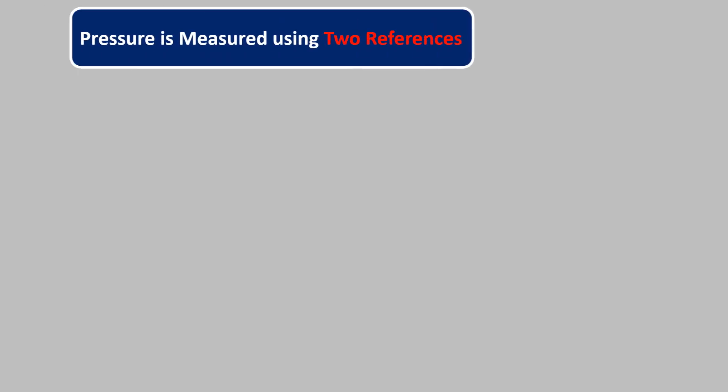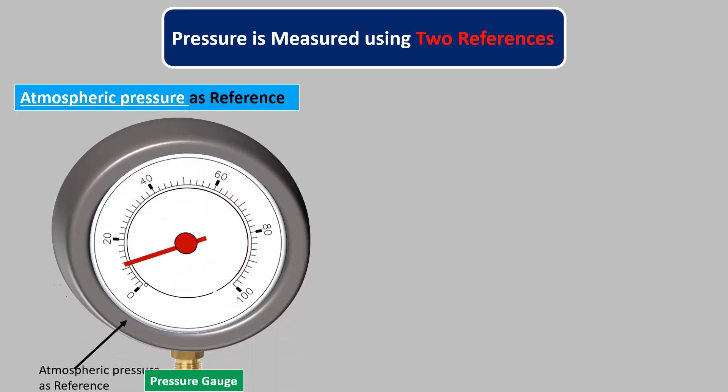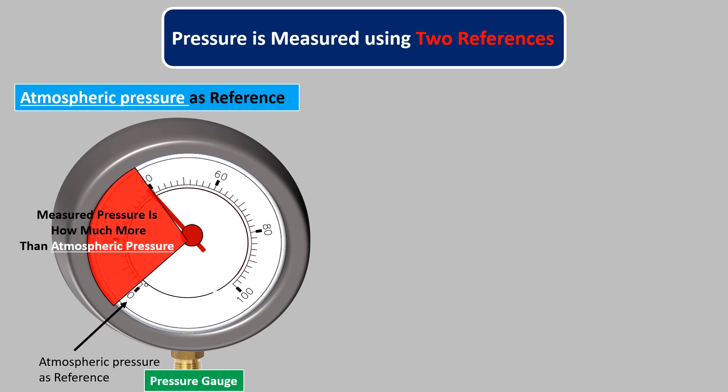Usually pressure is measured using two references. One in which the atmospheric pressure is used as reference. That means we calculate how much more the measured pressure is than the atmospheric pressure. And this pressure is known as gauge pressure.